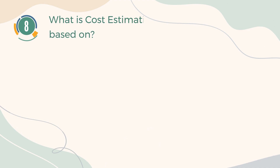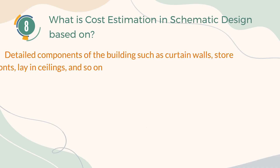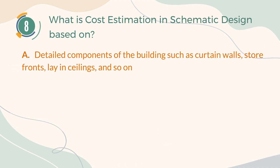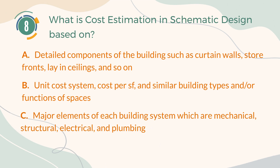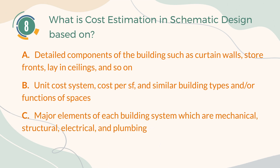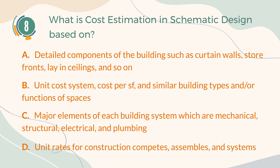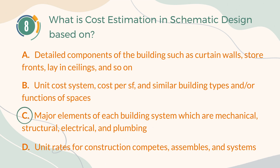Number 8. What is cost estimation in schematic design based on? A. Detailed components of the building such as curtain walls, storefronts, lay-in ceilings, and so on. B. Unit cost system, cost per square foot, and similar building types and/or functions of spaces. C. Major elements of each building system: mechanical, structural, electrical, and plumbing. D. Unit rates for construction components, assemblies, and systems. The correct answer is C: major elements of each building system — mechanical, structural, electrical, and plumbing.